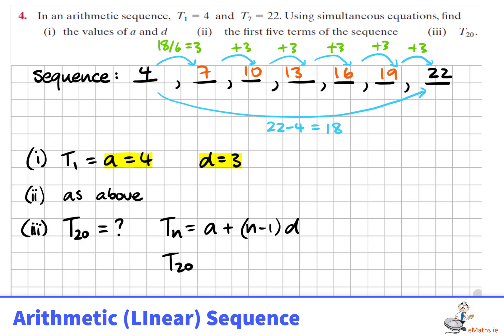To get term 20, we could use the term n is equal to a plus n minus 1 times d, giving that term 20 is 61.